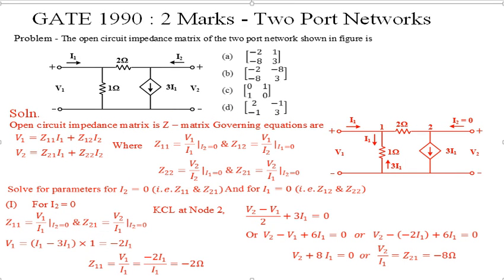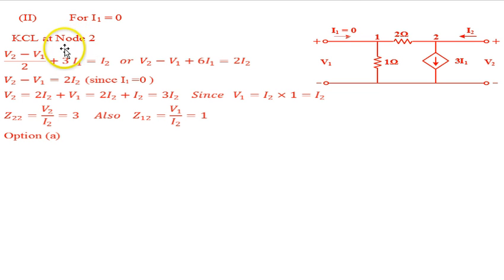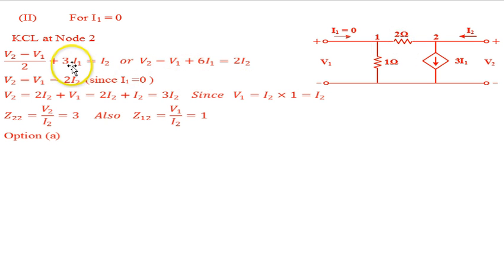Now we find Z12 and Z22 by setting I1 = 0. Applying KCL at node 2 with I1 = 0: (V2 - V1)/2 + 3I1 = I2. Since I1 = 0, this simplifies to (V2 - V1)/2 = I2, so V2 - V1 = 2I2.